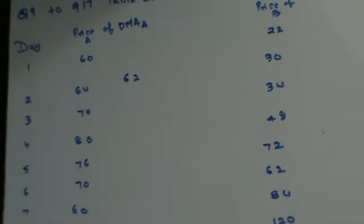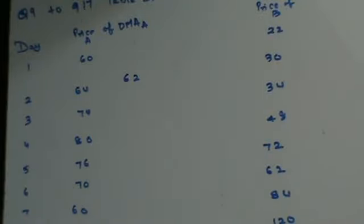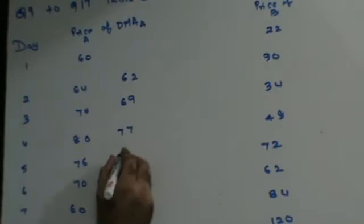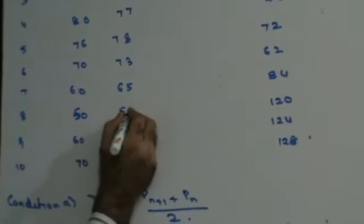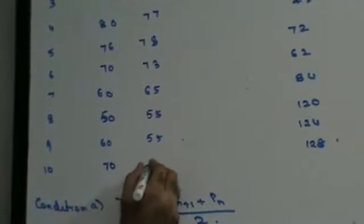A shortcut method: find the difference, divide by 2, and add to the smaller number. For 60 and 64, the difference is 4, half of 4 is 2, add to 60 to get 62. For 64 to 74, difference is 10, half is 5, add to 64 to get 69. Continuing this way, the DMA values for A are: 62, 69, 77, 78, 73, 65, 55, 55, and 65.